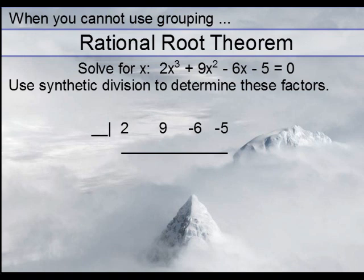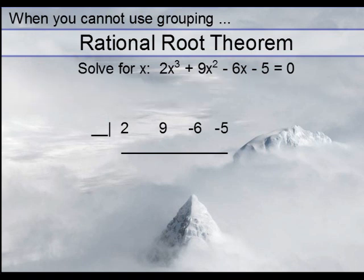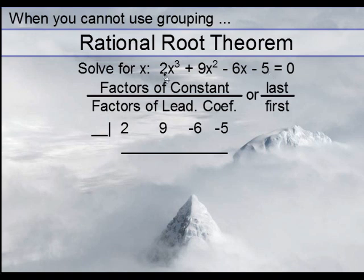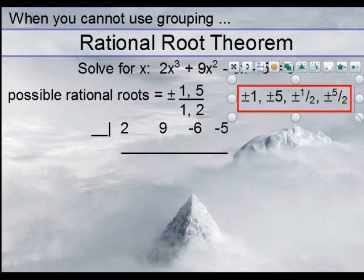The trick when using synthetic division is that you try a number here and we want to get zero for a remainder. So, yes, you'll need to do trial and error. When you plug in values, we can pretty much plug in anything. But the question is, what number goes here and how do we figure that out? What you're going to need to do is generate a list of numbers. That list comes from the constant and leading coefficient. Determine those factors and then write a ratio. In other words, the last number on top, first number on the bottom.